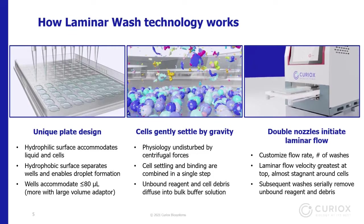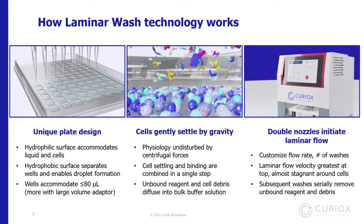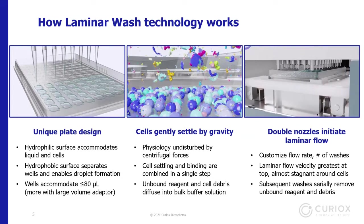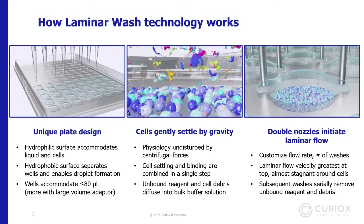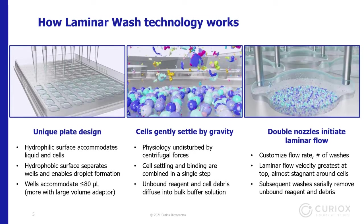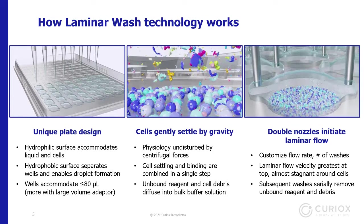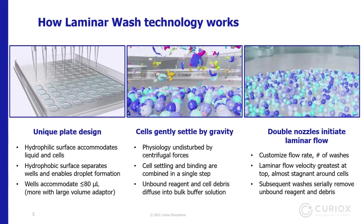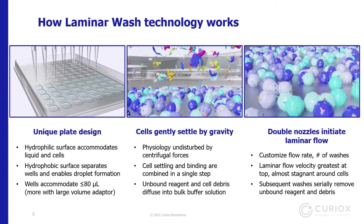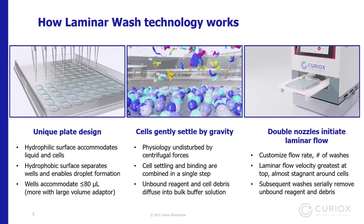As cells incubate, they settle to the bottom while cell debris and unbound antibodies remain in solution. Once settled, you put the plate into the washer, where you can customize flow rate, number of washes, and other parameters via a touch screen. The washer lowers a fluidic head onto the plate, and every well gets its own dedicated pair of nozzles — one to dispense fresh buffer and one to aspirate waste. Through serial dilution, it removes unbound antibodies and debris while leaving cells intact at the bottom.